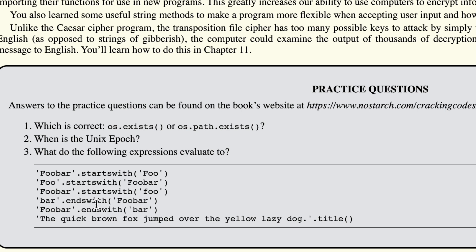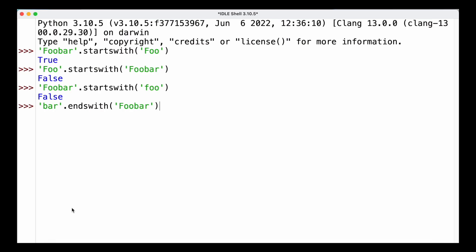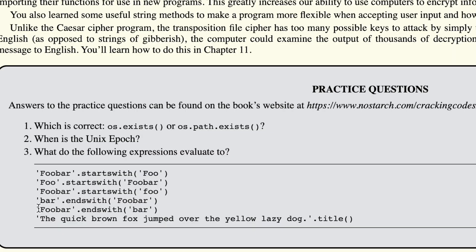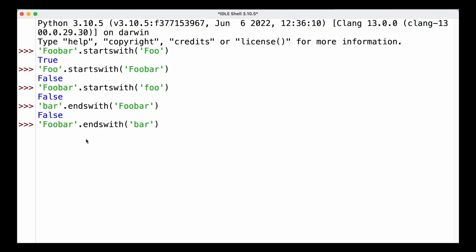The next expression uses the endswith function, which checks if the end of the string matches a specified argument. Here we're checking whether 'bar'.endswith('foobar') — foobar does end with bar, but not the other way around, so this evaluates to False, which we can check in our interactive shell. But if we do the reverse — 'foobar'.endswith('bar') — that evaluates to True, which we can also verify in our interactive shell.